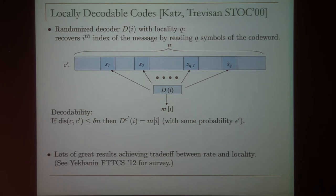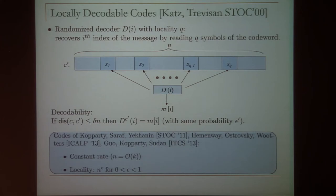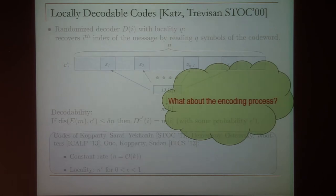A lot of research has gone into building locally decodable codes with good parameters — Yekhanin has a really good survey on this topic. More recently, the works of Koperty et al., Hemingway et al., and Guo et al. actually build locally decodable codes which get constant rate, meaning the length of the codeword is linear in the message, and sub-linear locality. Today we want to ask: what about the encoding process? Can we do something similar for encoding?